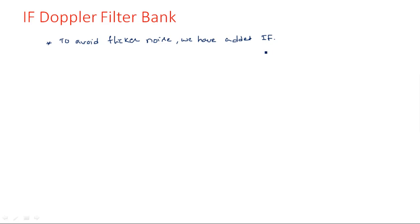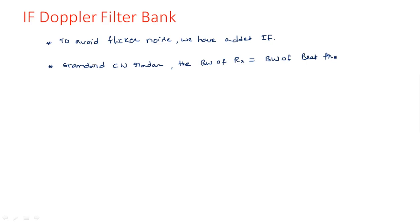Now, how do we select the bandwidth of the receiver? In the standard CW radar, the bandwidth of the receiver is equal to the bandwidth of the beat frequency amplifier. But now, the bandwidth of this non-zero IF receiver is equal to the bandwidth of the IF amplifier, because now the IF amplifier is a part of this circuit.